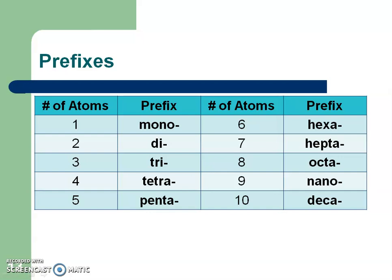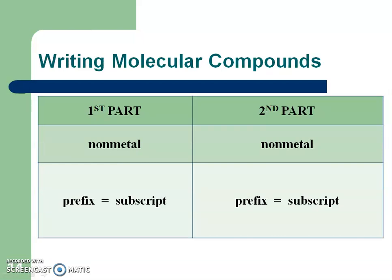For the most part you're going to see prefixes one through six most often. Seven, eight, nine, and ten don't appear very often — maybe once or twice — but they are there. Mostly you'll see the first five, with hexa appearing a couple of times. Pause again to make sure you have this information down.